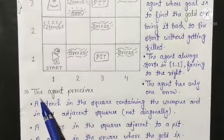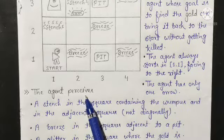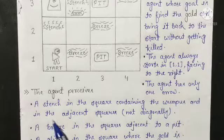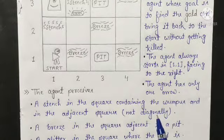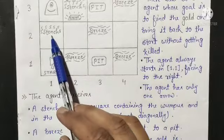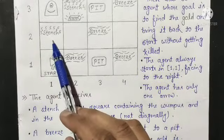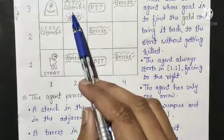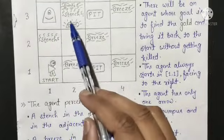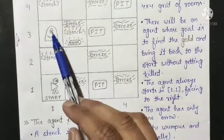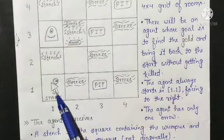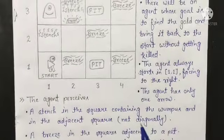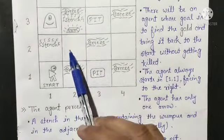The agent perceives a stench in the square containing the Wumpus and in the adjacent squares, but not diagonally. So the agent can feel stench where the Wumpus is present, and in adjacent rooms of the Wumpus. There is stench in those adjacent rooms, but not diagonally.